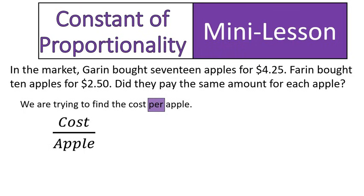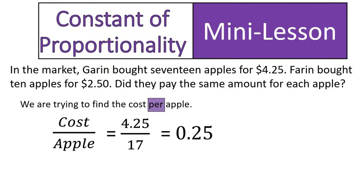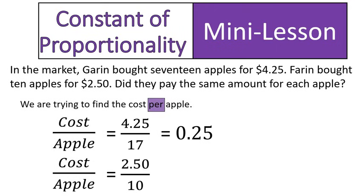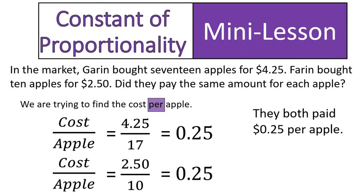So you set it up — what am I looking for? Cost per apple. I set it up: cost over apples, and then I just fill in the blanks. For Garren, it was $4.25 over 17 — the cost over the number of apples. Then we divide: 4.25 divided by 17 equals 25 cents. I'm going to do the same for Farren's: the cost over the apples, $2.50 over 10. Then I divide and I'll get 25 cents. They both paid 25 cents per apple, so they are proportional to each other.